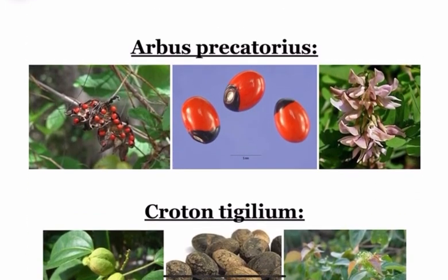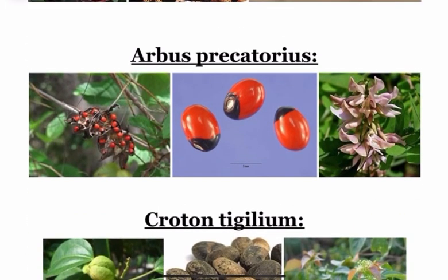Next we have Abrus precatorius, also called as Lunchi, Rati seeds or Crab eyes. The active principle is Abrin, which is the most potent form. We also have Abrin and Abralin. Rati seeds are used to produce Sui needles, which are ideal cattle poison and they resemble the viper snake bite.